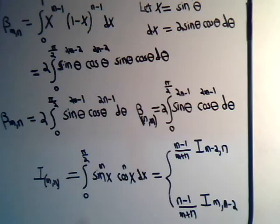Or it could come out as N minus 1 over M plus N. And in that case, it's I, the integral of M comma N minus 2. If this is not familiar to you, you might want to go back and review those videos where we derived these two reduction formulas for this kind of integral here.